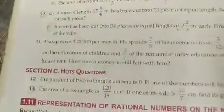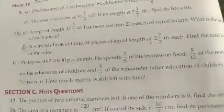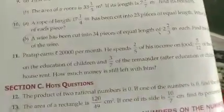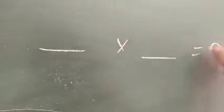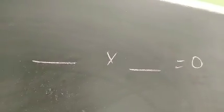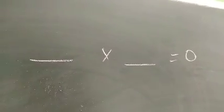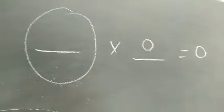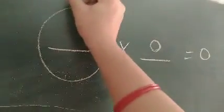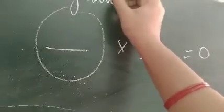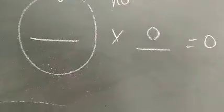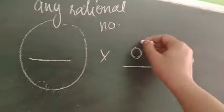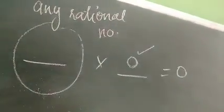Next is question number 12. The product of two rational numbers is 0. If one of them is 0, find the other. If one of the numbers is 0, then you can multiply it with 0 and the product is 0.